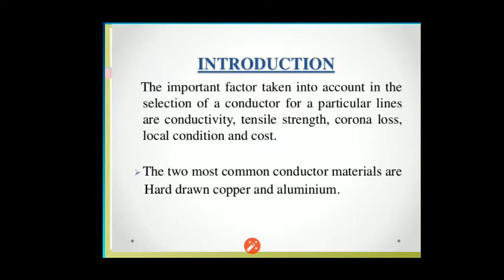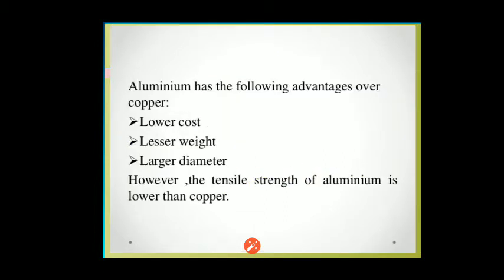First, we will discuss the introduction. The important factors taken into account in the selection of a conductor for a particular line are: conductivity, tensile strain, corona loss, local conditions of the atmosphere, and the overall cost of the conductor. The two most common conductor materials used are hard-drawn copper and aluminium.